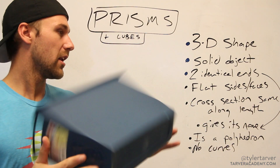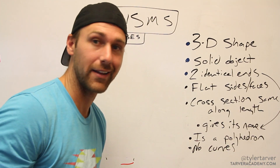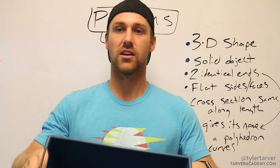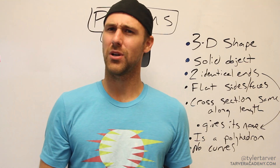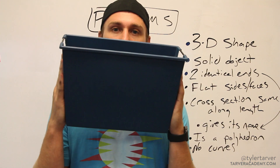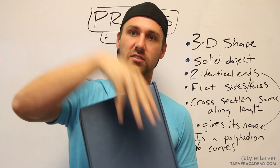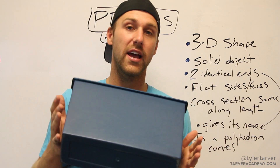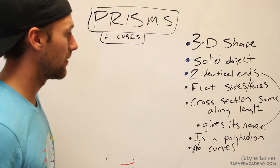If you're wanting to name one of these, it's all about that base. This is a rectangle and this is a rectangle — they're my bases — so this is a rectangular prism. If this were a triangle and it went across with rectangles on the sides and triangles on the bases, you'd call it a triangular prism. It's named after its base.